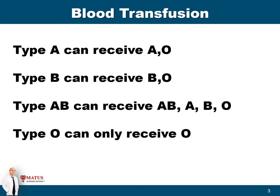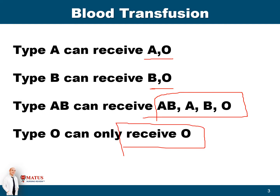To summarize: type A can receive type A and O. Type B can receive B and O. Type AB can receive everything — it's the universal recipient. Type O can only receive O. But remember that type O can be given to any patient, so type O is the universal donor.